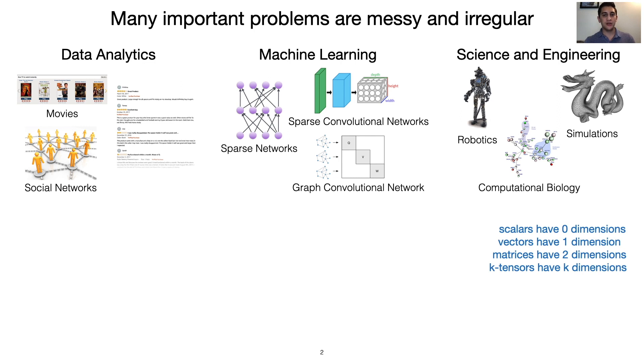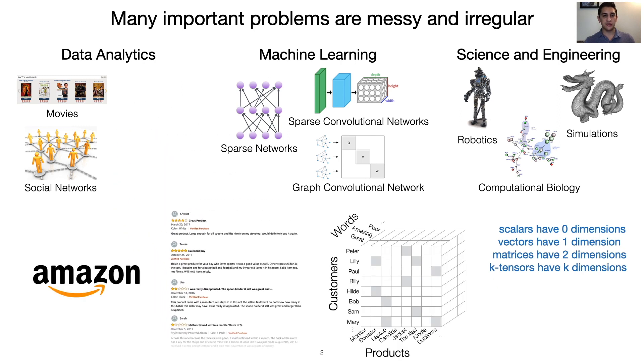For example, consider a dataset of Amazon reviews. Given that every customer does not review every product with all words, this tensor is extremely sparse. In this case, the sparse representation is far more space efficient, and there are many similar situations where computing over sparse inputs is important.